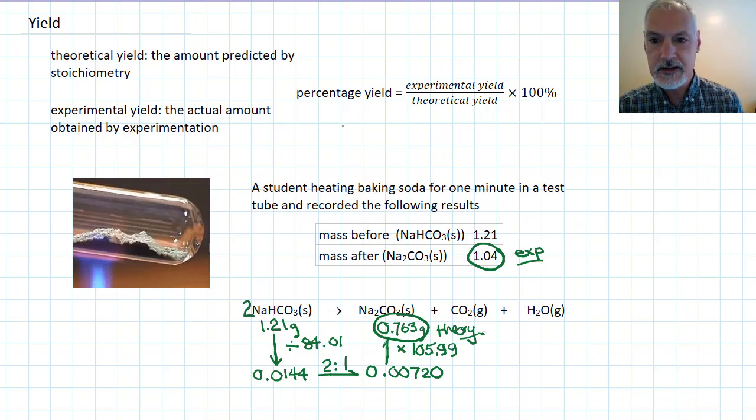Now to calculate now what the percentage yield is in my experiment. Let's put the experimental yield on top, which is 1.04 grams. Theory says that I should get 0.763 grams. Multiply that result by 100. And we finish up with 136%.